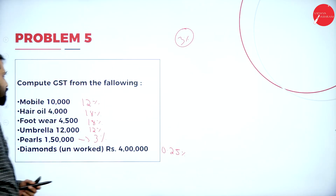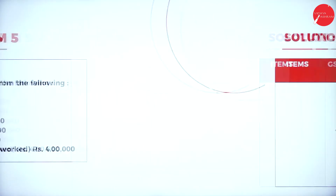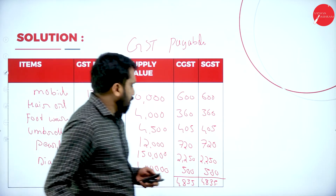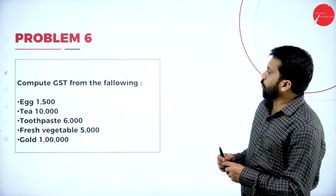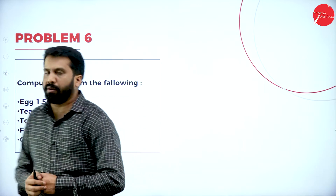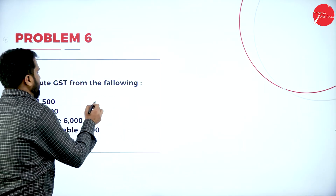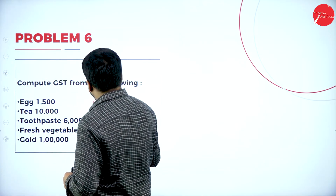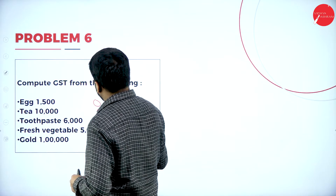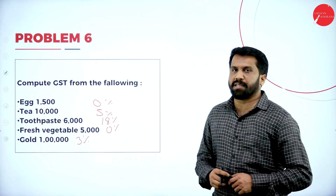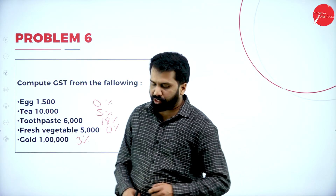Now the last problem — we have egg, tea, toothpaste, fresh vegetable, and gold. Egg is a food item so zero percent, tea is five percent, toothpaste is eighteen percent, fresh vegetable is zero percent again as a food item, and gold — they have not mentioned unworked — so we go for three percent.